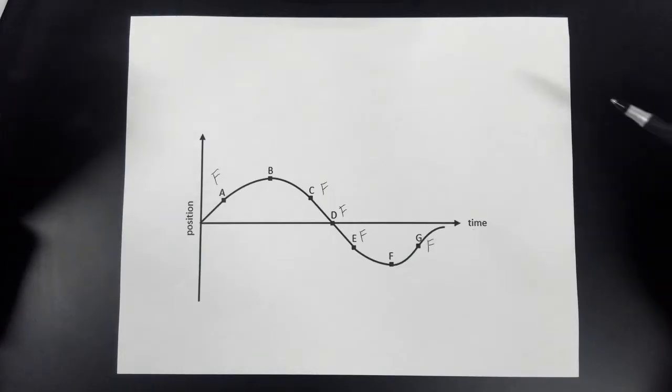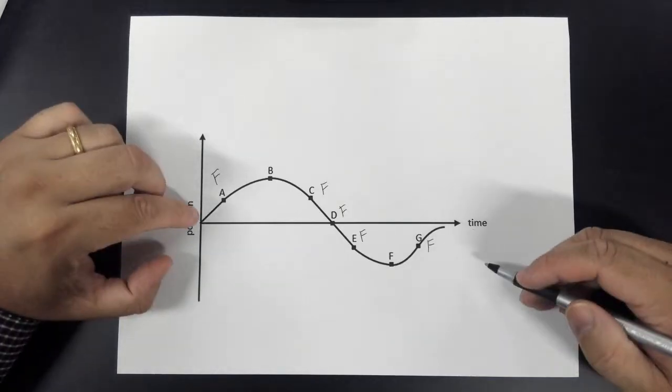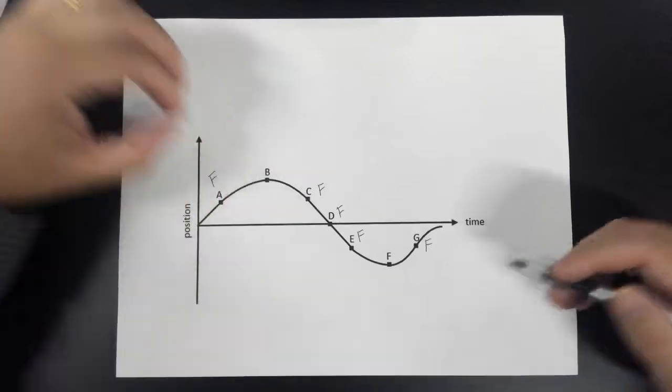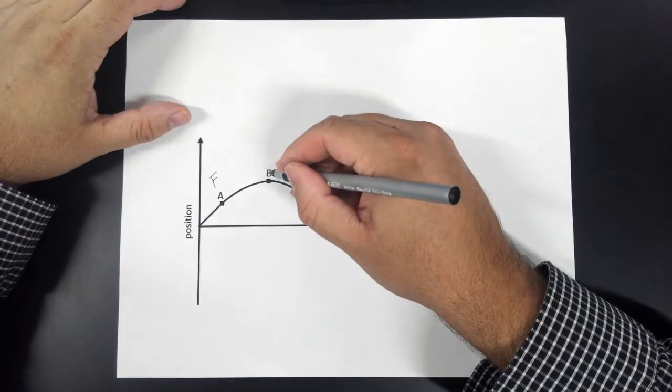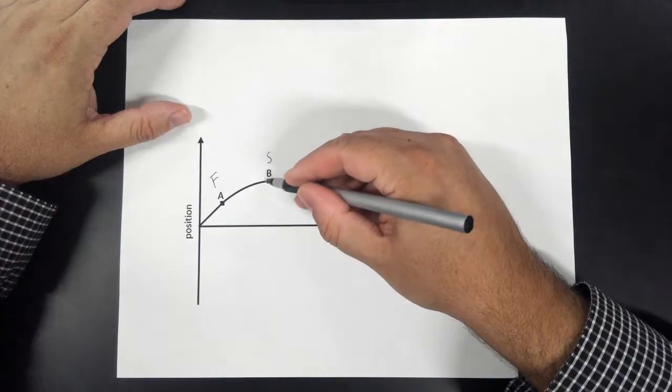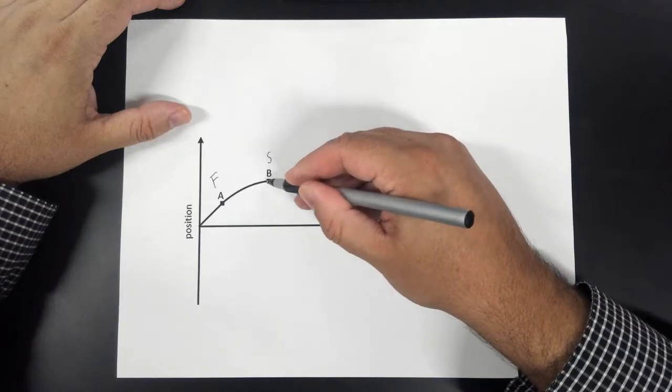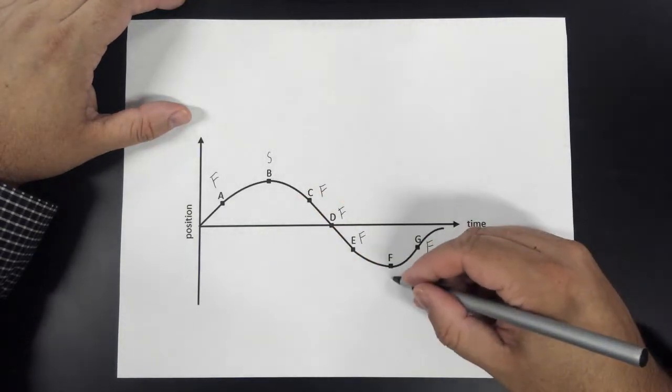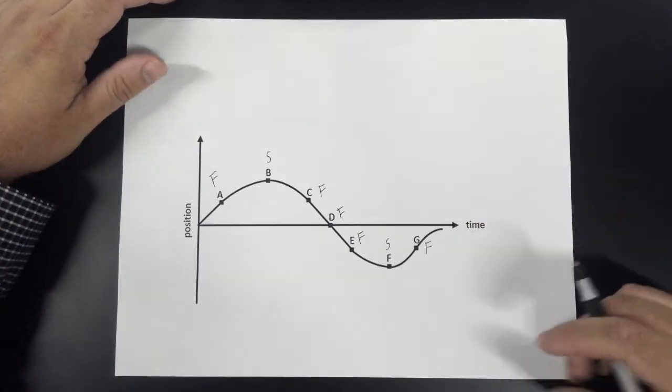Where would it be slow? Slow would be the opposite. It would be where the line is the least steep. Imagine once again you're a little person walking on this graph. Where is it going to be the easiest places for you to walk? The answers would be here at B. It's going to be slow. In fact, at B, it's going to come to a complete stop, slow down, come to a complete stop, and then start moving again. And also at F right here, it's going to be slow.